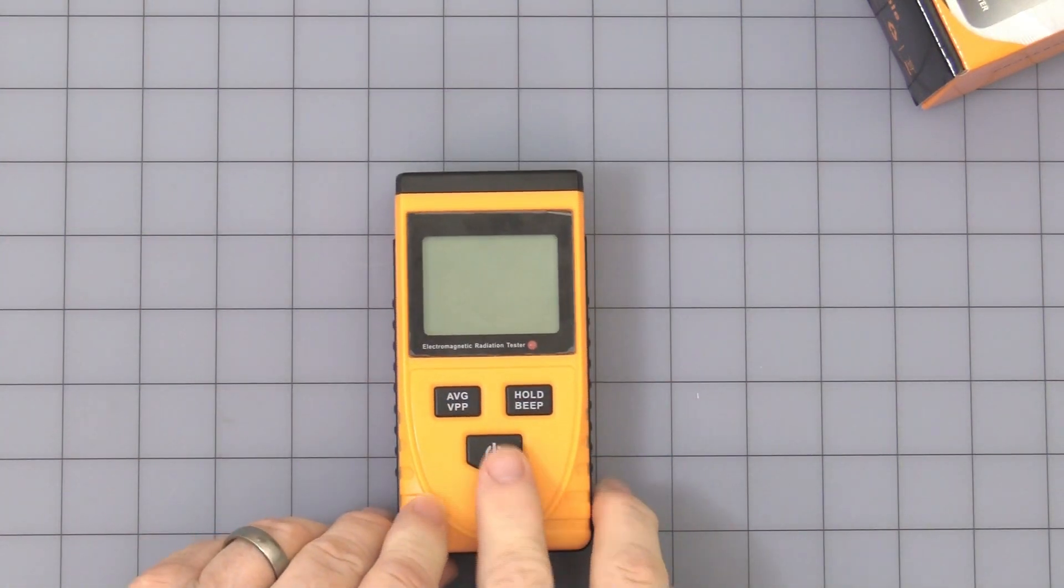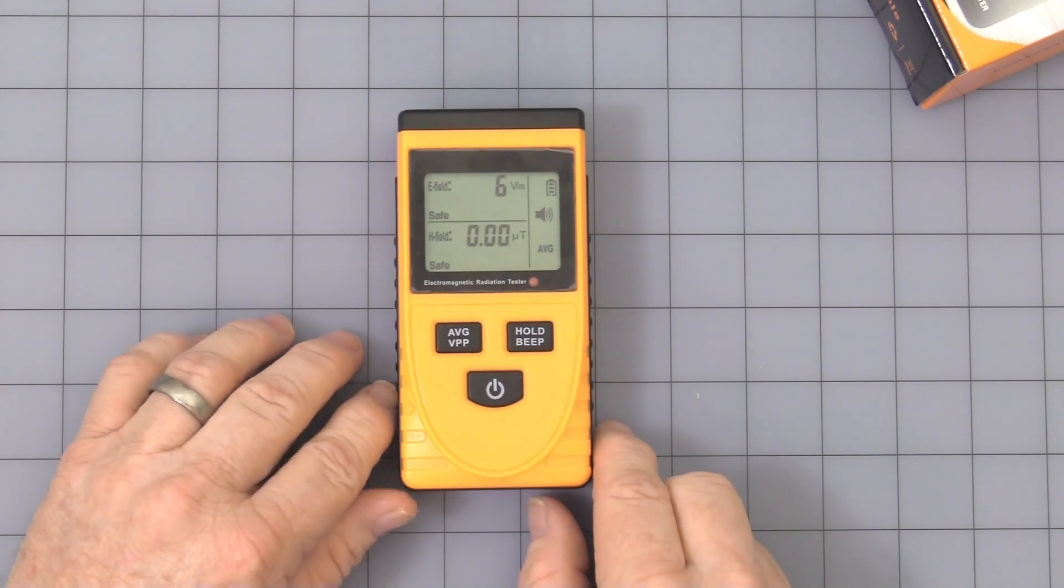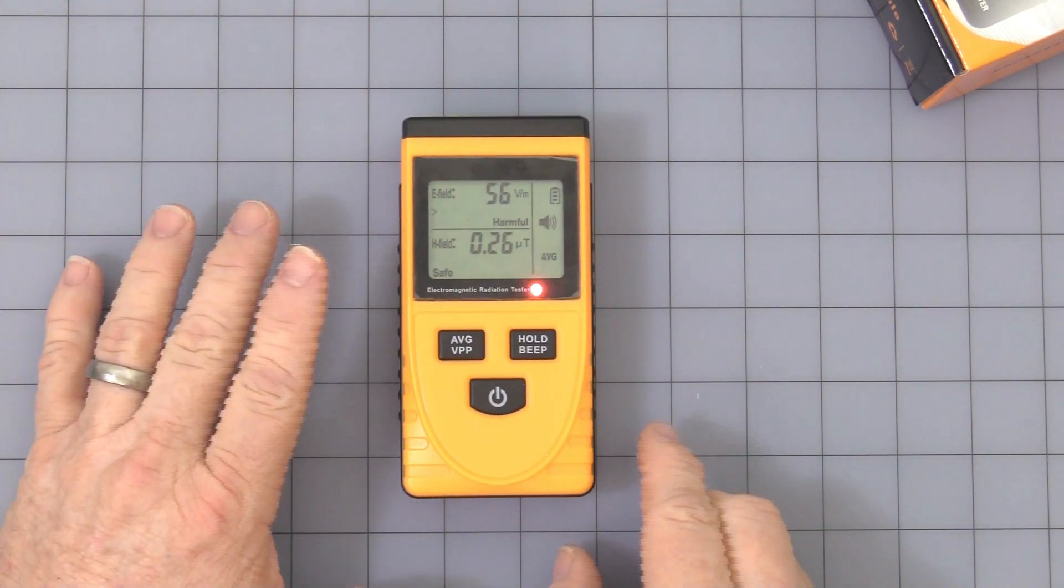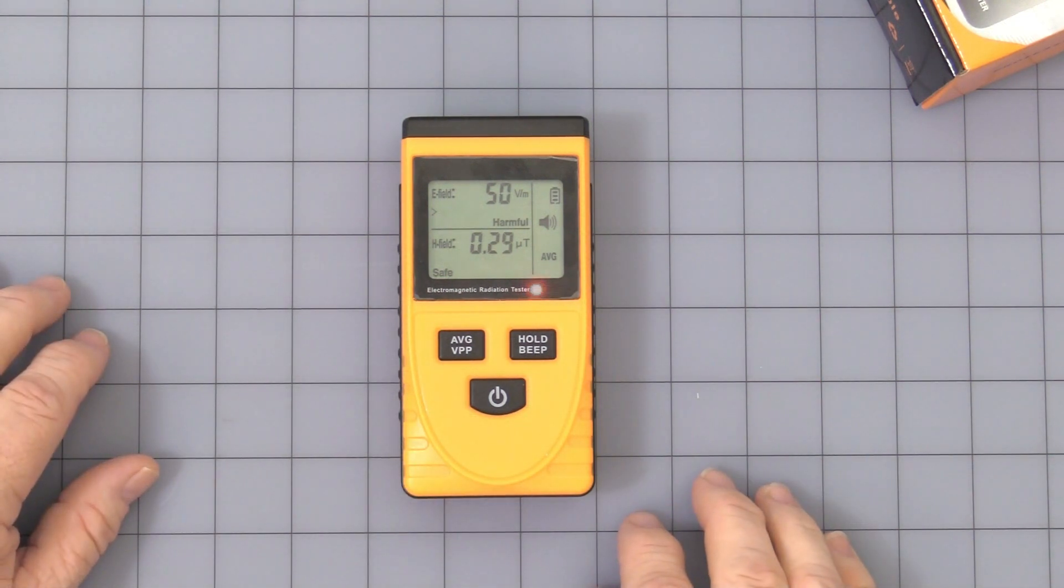You have three buttons in the front. Turn it on by pressing and holding the on-off button. As you can see, right off the bat, because of all the lights, power cords, and test equipment, it's reached its trigger point.